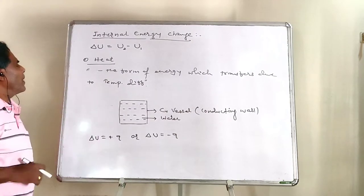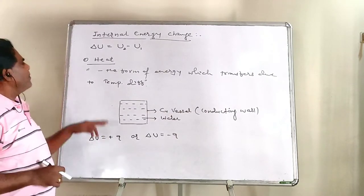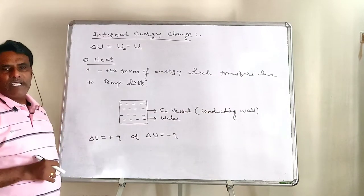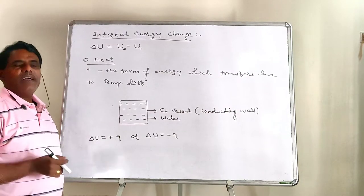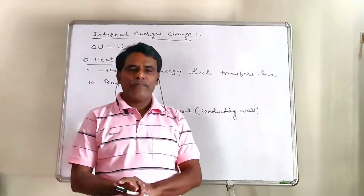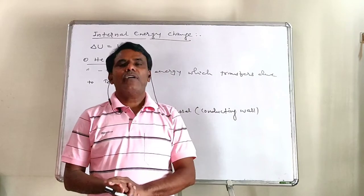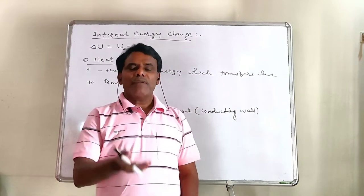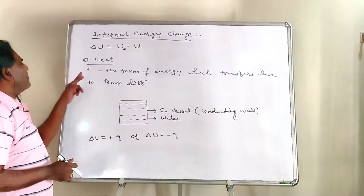Number one: by exchange of heat between system and surroundings. The second method is work done by the system on surroundings, or by surroundings on the system. First of all, we shall see change in internal energy by heat.